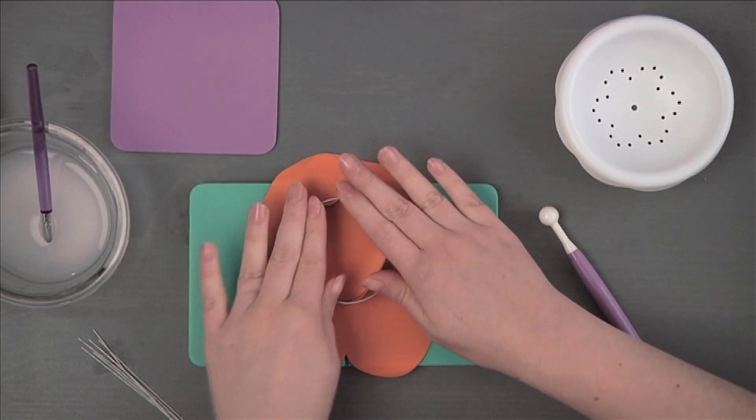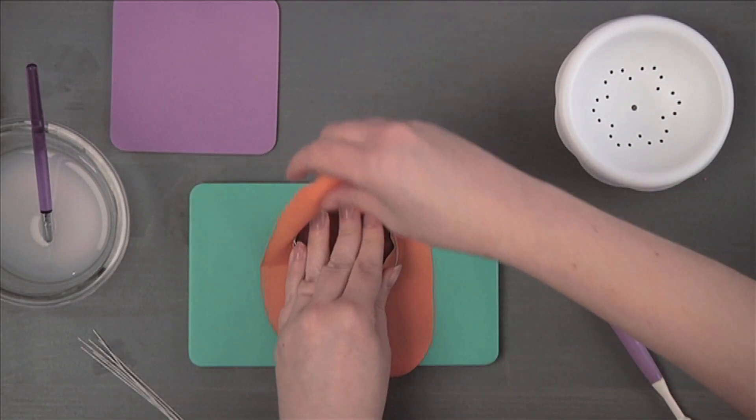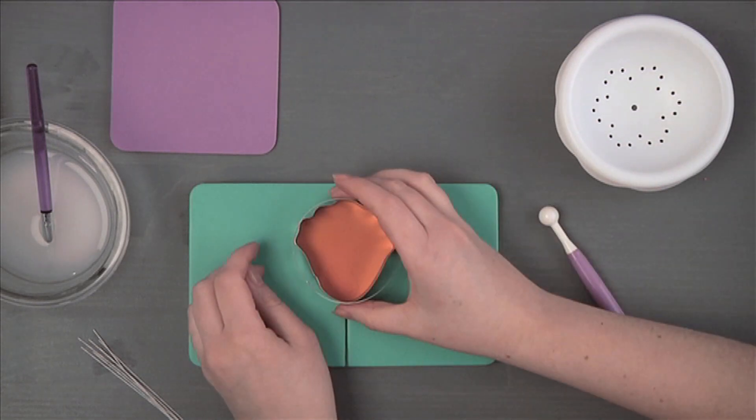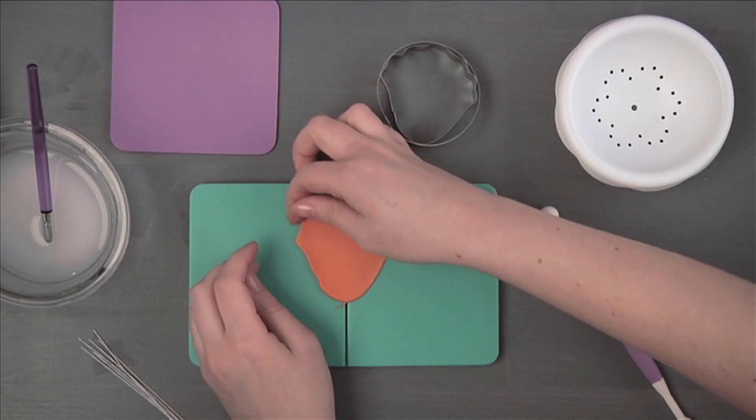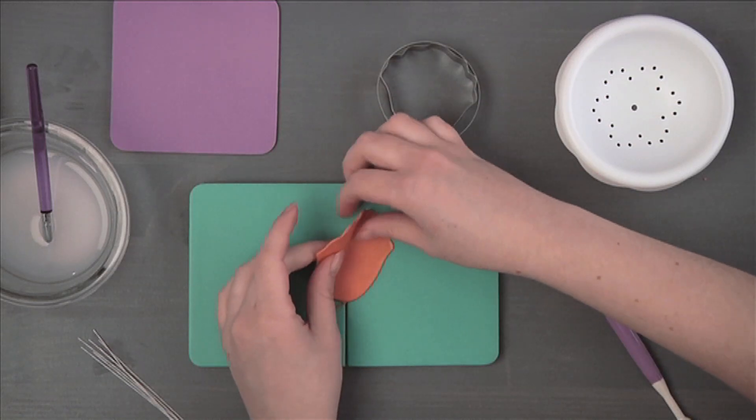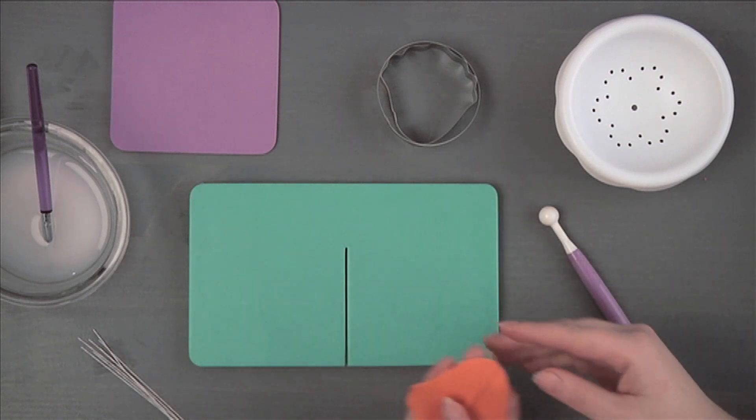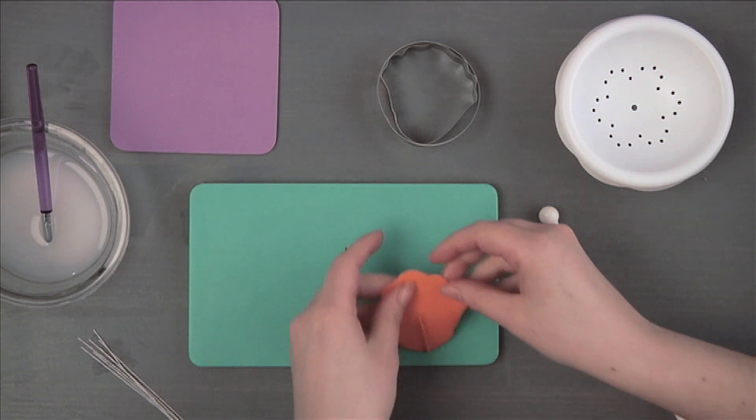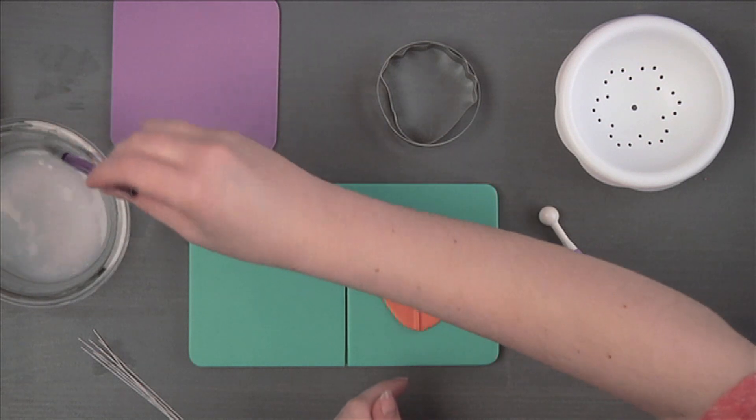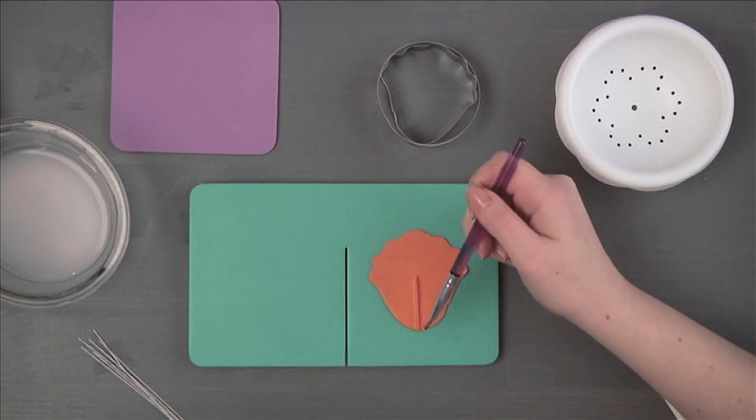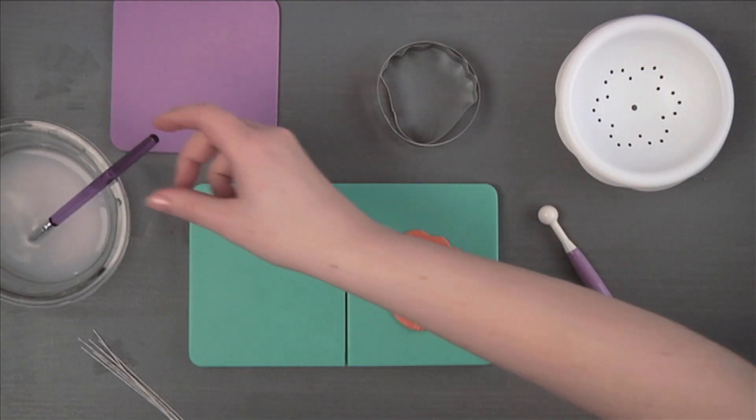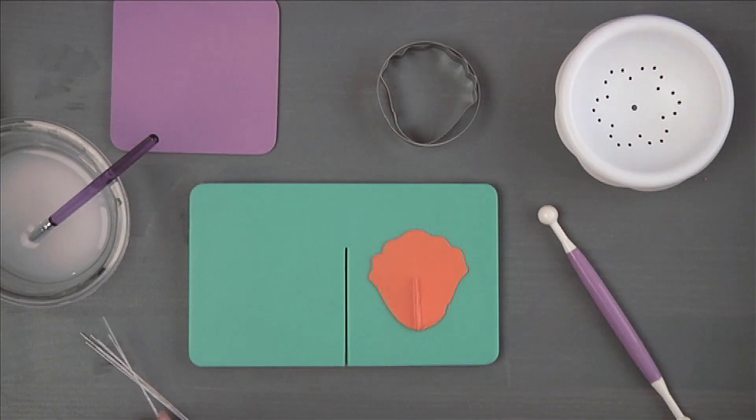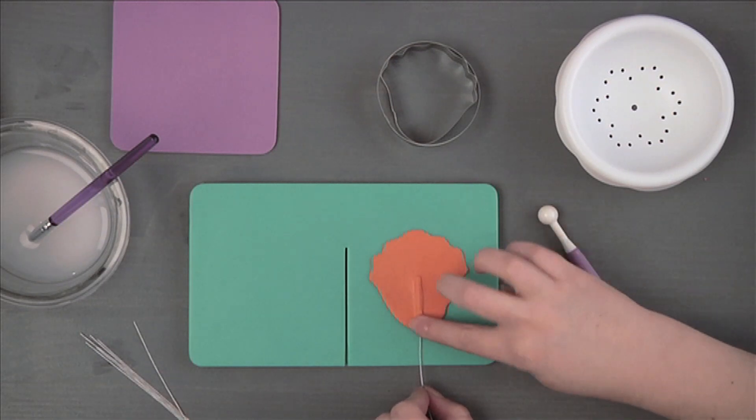Using the poppy petal cutter, cut shapes. Brush the side of the ridge with gum glue adhesive. Place the wire against the ridge and fold the ridge over the wire.